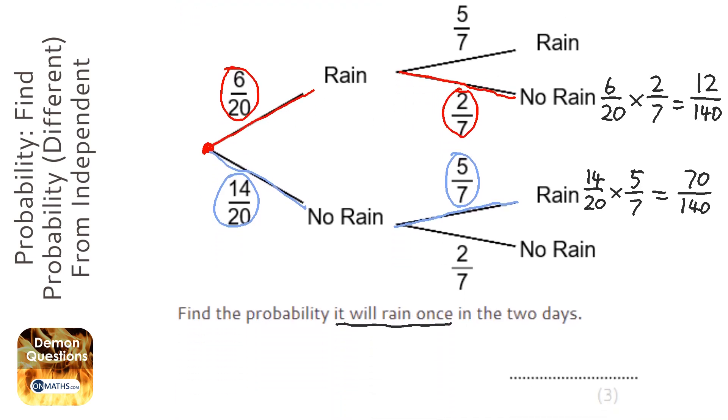Now when you're given a choice between either it raining on the first day, on the Monday, or raining on the second day, the word 'or' in probability means add. So you add the two probabilities that you found together. When we do that we end up with 82/140.